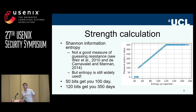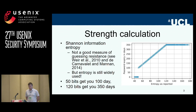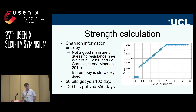The lifetime of the password is a linear mapping from the entropy to the days. If you've got a password of 50 bits, that gives you 100 days of expiration, and then it linearly goes up to 350 days for 120 bits of expiration. The university uses Shannon information entropy to calculate password strength, which is not the greatest measure but is still widely used and does the job for the purpose of the study.